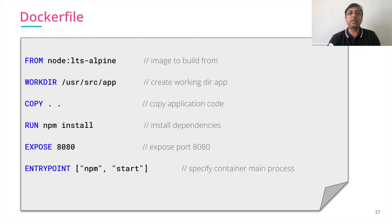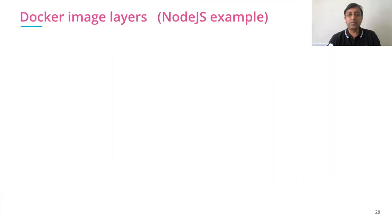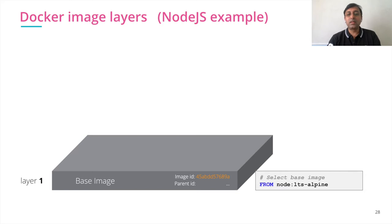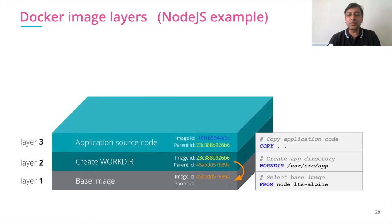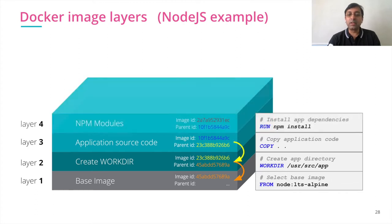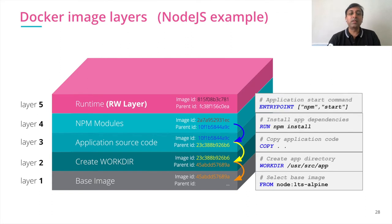The entry point is the container's main process — npm start. Each instruction specified in the Dockerfile creates an image layer. The first instruction fetches the base image from the Docker registry — that's layer one. The next instruction creates the working directory — that's layer two, connected to layer one via a parent ID. Layer three copies the application source code, layer four runs npm install, and layer five sets the entry point.